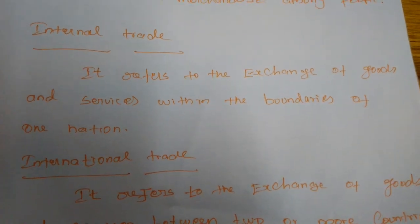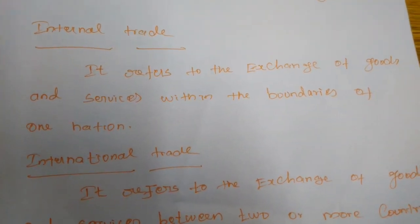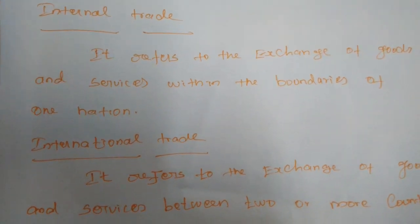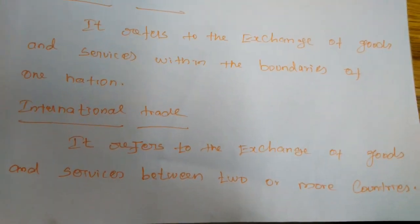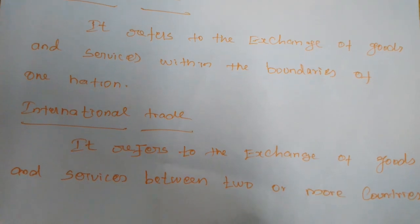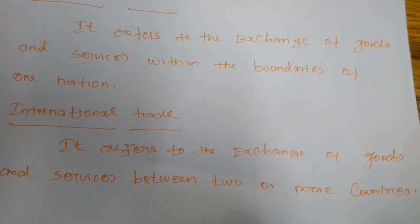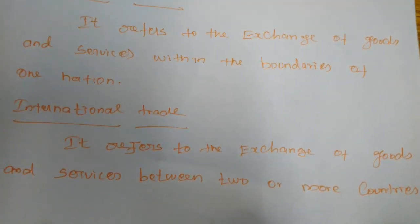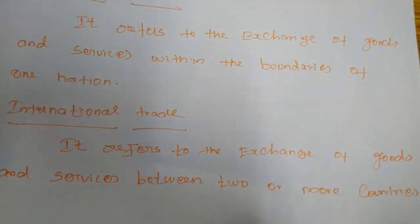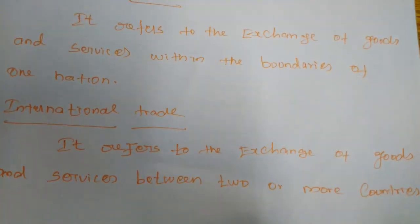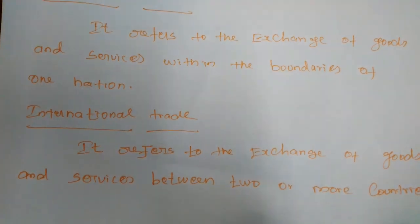For example, if trade takes place within the boundaries of India only, that is called internal trade — what is produced in India is consumed by Indian people only. International trade refers to the exchange of goods and services between two or more countries. Multinational companies produce commodities in one nation, which are then exported to other nations and consumed throughout the world.